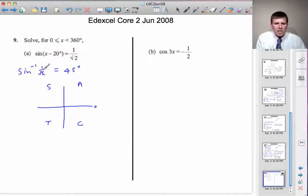Now, if sine is going to be positive, 1 over root 2 being positive, the two quadrants we're interested in is this one and this one. Those are the two quadrants where sine is positive. And the 45 degrees, we mark on with the horizontal axis.